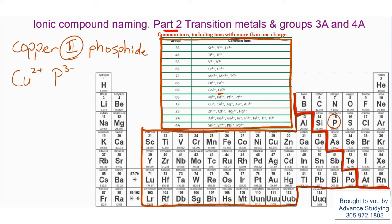When I write this compound, it becomes Cu3, which came from phosphorus, and P2. In this case, the two came from copper. So copper-2-phosphide, I write as Cu3P2. In this case, I know that this is an ion with more than one charge, because I specified the two on top.